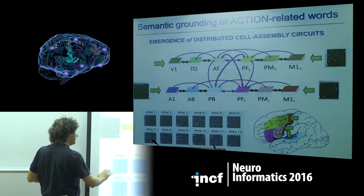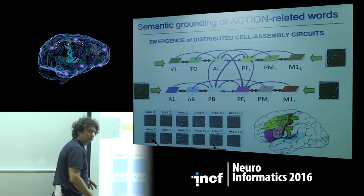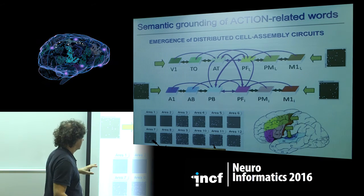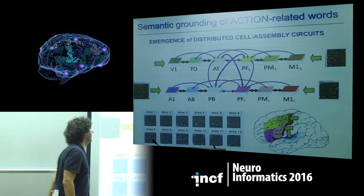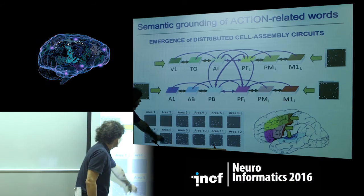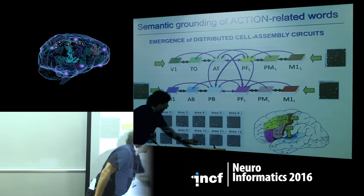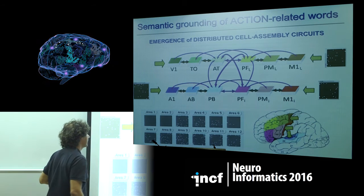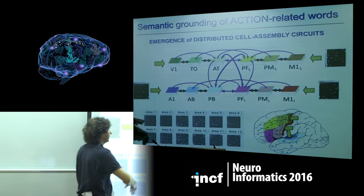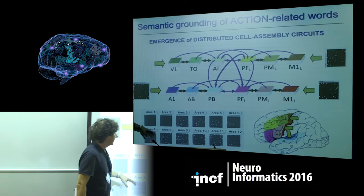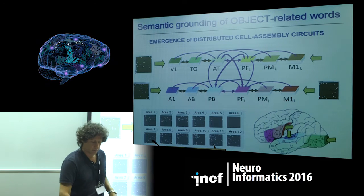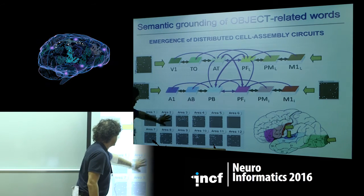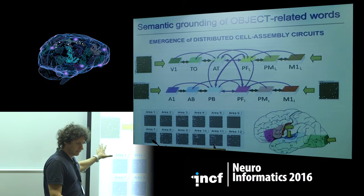We can see cells belonging to one example circuit in the 12-area network. The cell assembly extends from the six perisylvian areas to the extrasylvian areas. When stimulated by the motor area, the assembly extends toward the motor side. When we have object-related words, the cell assembly extends on the visual side.